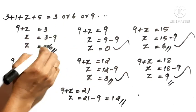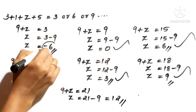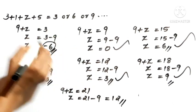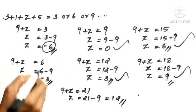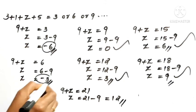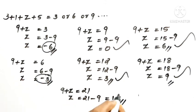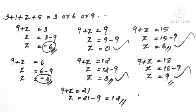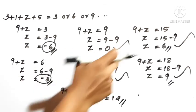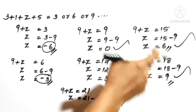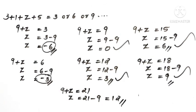So we have 4 possible answers for Z. The negative values and the 2-digit value 12 are rejected. The valid possible values of Z are 0, 3, 6, and 9 — giving us 4 possible answers.